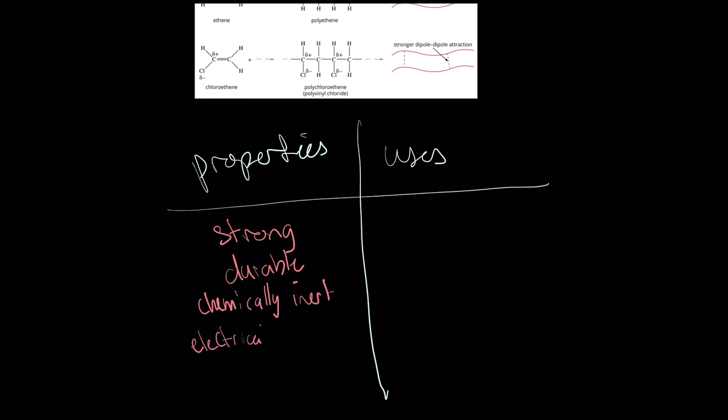As a result, PVC is strong and durable, as well as being chemically and electrically inert. PVC is also flame-retardant due to its chlorine content. This makes it suitable for applications such as water and electrical pipes and floor coverings.